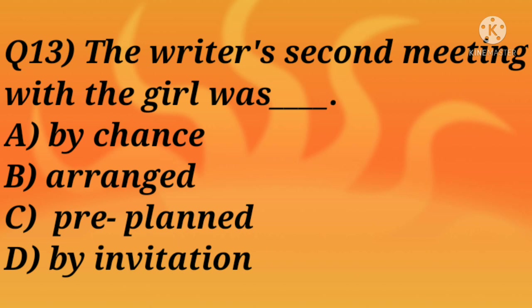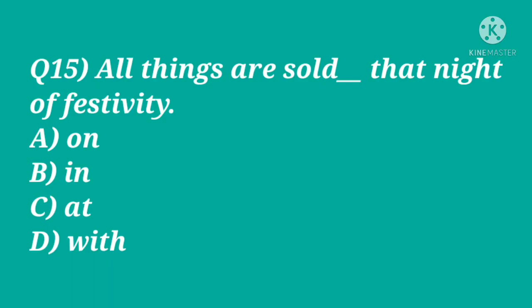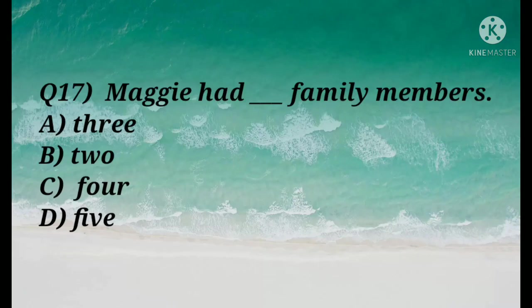Question 14: The writer's second meeting with the girl was — by chance, arranged, pre-planned, or by invitation? The correct answer is pre-planned, because the writer decided on the very first day to meet the girl the next Saturday. Question 15: 'All things are sold — that night of festivity on/in/at/with.' This is about a preposition. Since it refers to a particular occasion, we should use option A: 'on.'